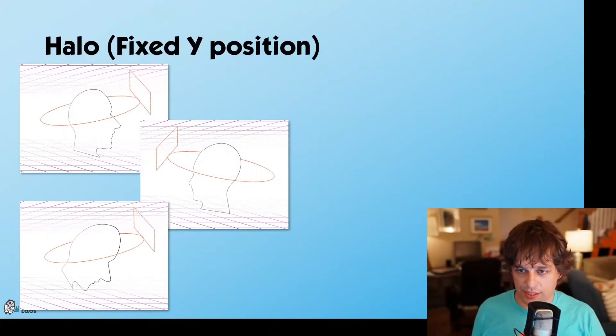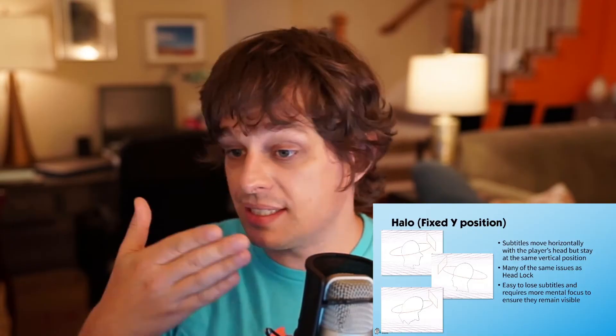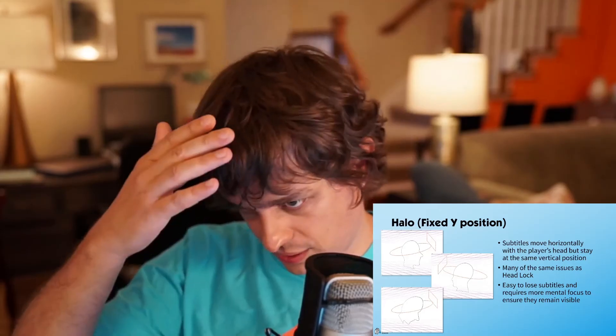The next one is the fixed Y position, or halo as I call it. This is where the subtitle stays in one spot and as you turn your head left and right horizontally it sticks with you, but vertically the subtitle stays in the same spot. We get a lot of the same issues as headlock — it's still in a specific position. At least now we can position it in our vision, but the problem is we can actually lose the subtitle: if you tilt your head too far down the subtitle's gone, so you have to expend conscious effort thinking about where it is. And again, you can't locate the audio source.